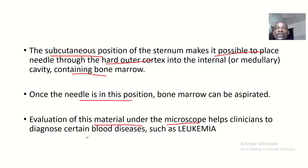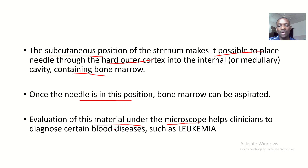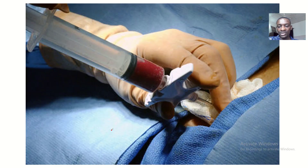Evaluation of this material under the microscope helps clinicians diagnose certain blood diseases, such as leukemia. When you take out the bone marrow, you are essentially taking out the material that forms blood, so you are studying the blood to check if there is anything abnormal. Taking bone marrow from the sternum is basically for evaluation to help doctors, nurses, or lab attendants determine if there are any blood diseases.